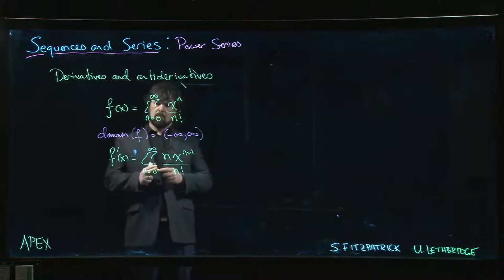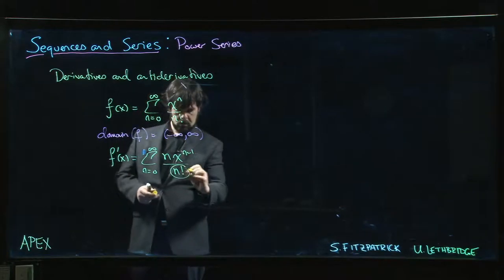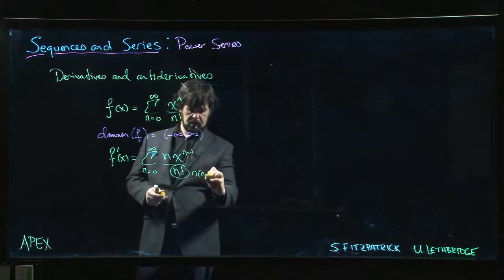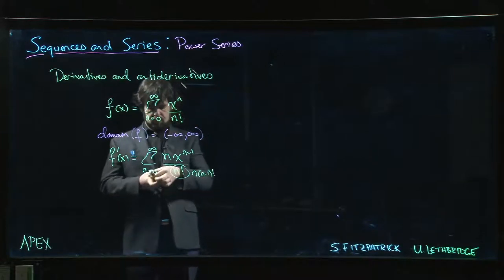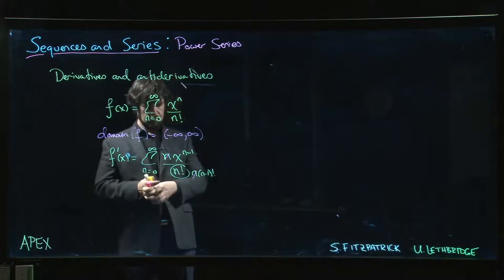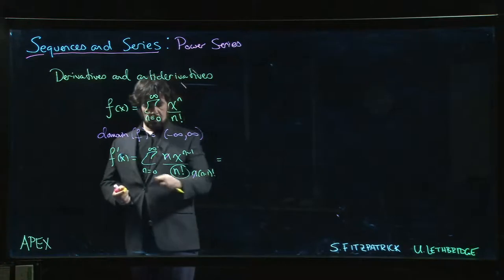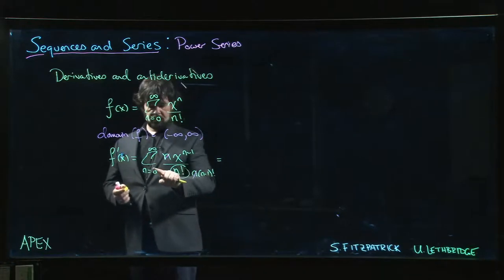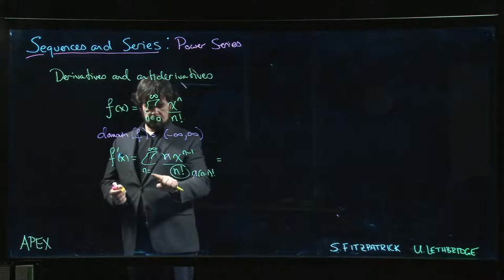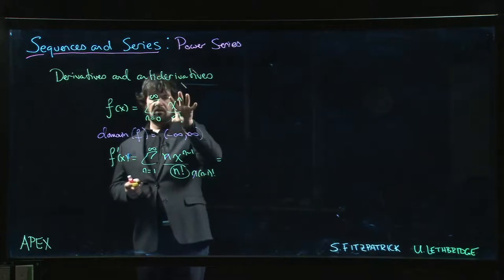But we can simplify this a little bit. n factorial, we know that that's n times (n-1) factorial, so we can cancel some n's. And also we can point out, actually before we cancel the n's, that sum should now start at 1.